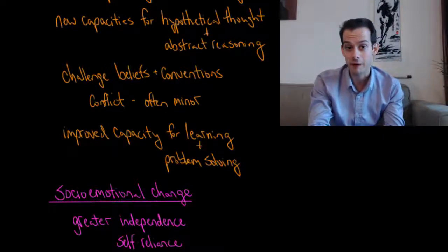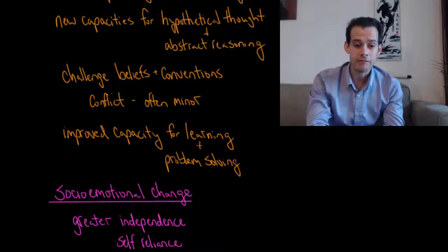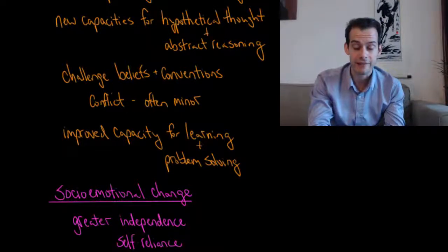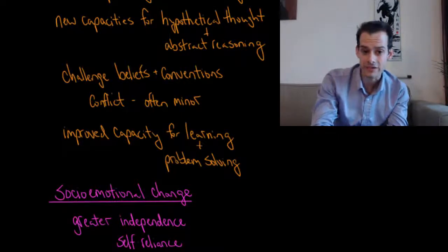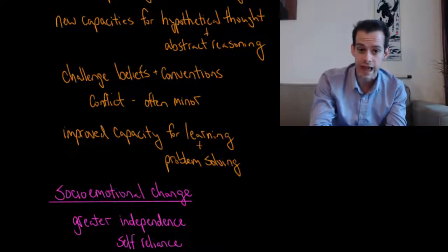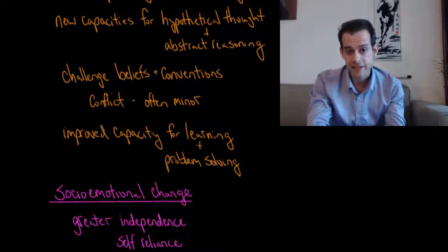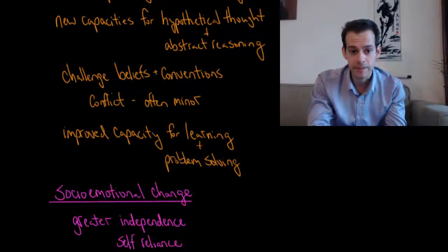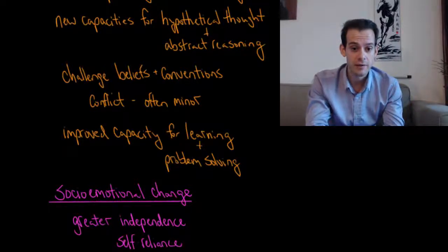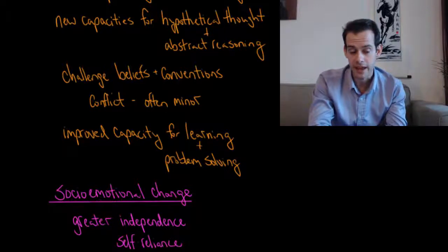They can become more rebellious, but it's worth noting that this rebelliousness is often in rather minor areas. There's often conflict between the conventions of society and what adolescents think, but these conflicts are often associated with things like language use or slang or hairstyles or clothing styles or preferences in music. This is also a time where these cognitive changes mean that we have increased capacities for learning and problem solving.